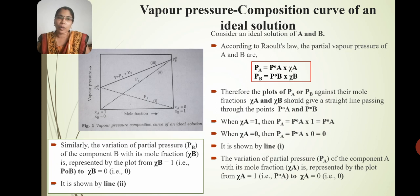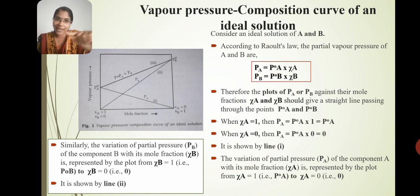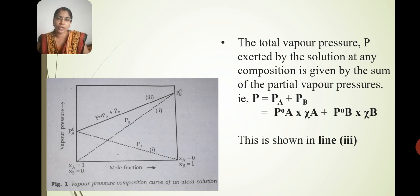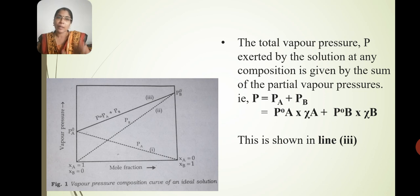Chi-B is equal to 1 gives us line 2, the dotted line 2 for component B. Then total pressure — straight line dotted line number 3 — that is the total pressure of the solution. P is equal to PA plus PB, that is P°A times chi-A plus P°B times chi-B. This is the ideal solution vapour pressure composition curve.